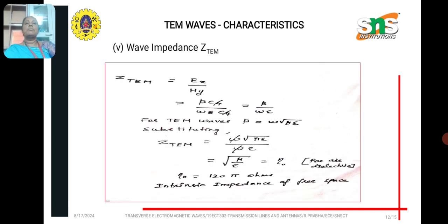And the next characteristic, wave impedance Z_TEM is EX by HY. So, EX is beta C4, HY is omega epsilon C4. C4, C4 get cancelled, we get the answer beta by omega epsilon is Z_TEM wave. That is impedance of transverse electromagnetic wave.